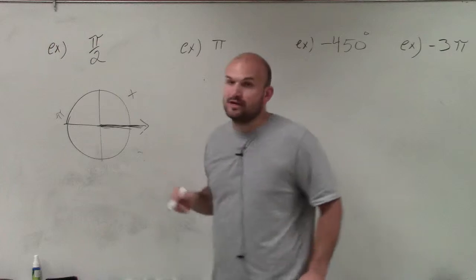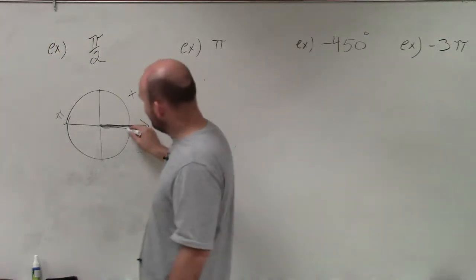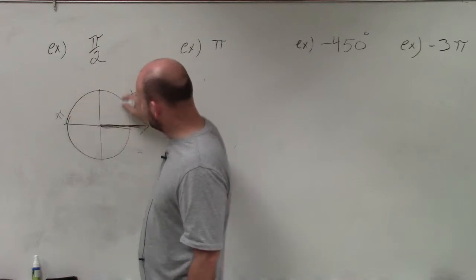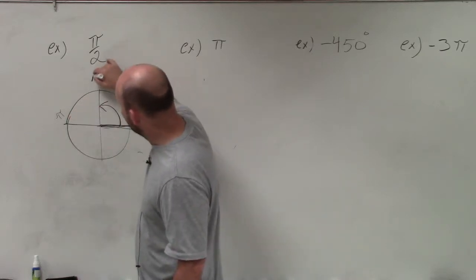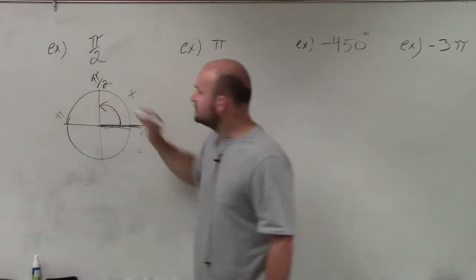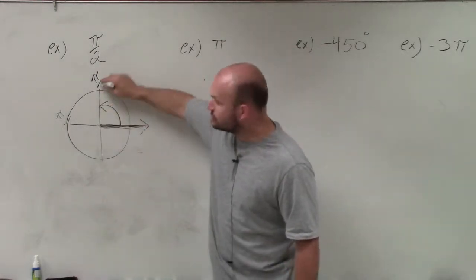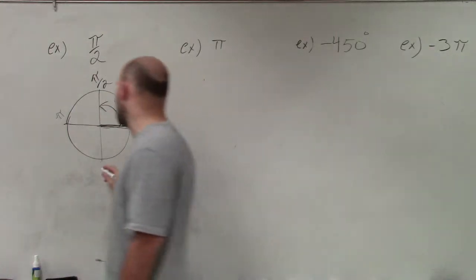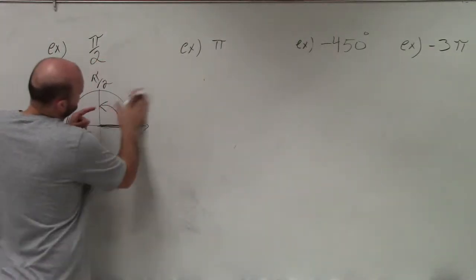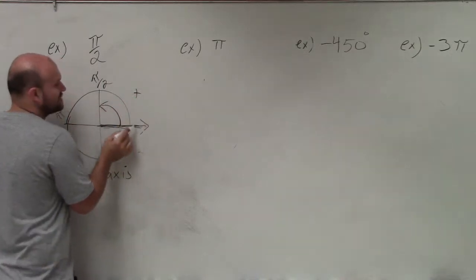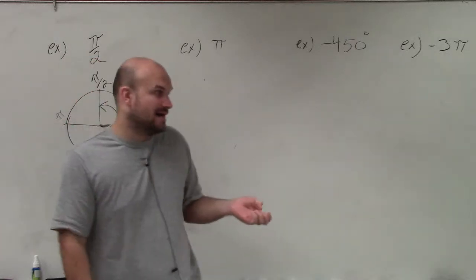This one says we want to travel a distance of pi halves — that means half of pi. So instead of going halfway around the circle, we're going to go half of that, so the angle would just be from there to there. Therefore we can see that the terminal side of our angle is going to lie on the y-axis. I travel counterclockwise because that's the positive direction and my angle is positive.